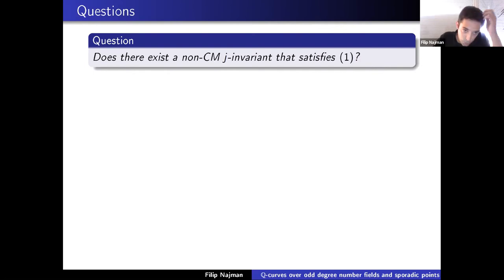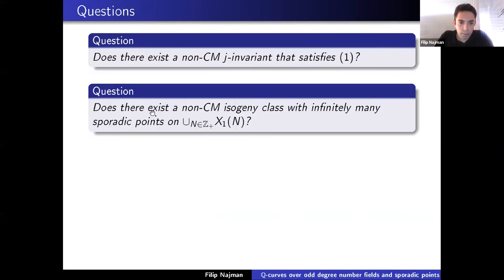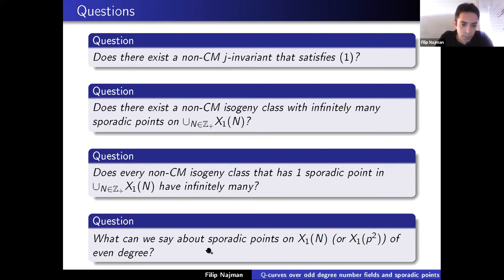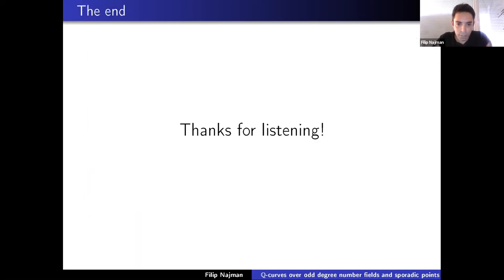Let me end with a few open questions. Does there exist a non-CM j-invariant satisfying the stated inequality? Does there exist a non-CM isogeny class giving rise to infinitely many sporadic points on all X_1(n)? Does every non-CM isogeny class with one sporadic point on X_1(n) have infinitely many? And perhaps hardest and most important: what can we say about sporadic points on X_1(n) or X_1(p²) if we want to approach Serre's uniformity conjecture? With these questions, I'll end — thank you all for listening.